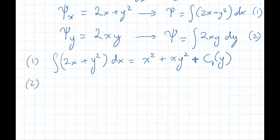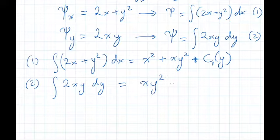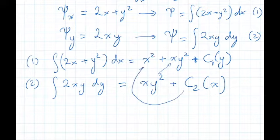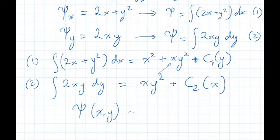The second integral, integral of 2xy dy, y gives us x y squared plus some constant c2 that is constant in y but that means it could be a function in x. In this case we're kind of lucky that certain things match. We can sort of pretty much guess that this is that, and there's no more y to be had so this can go to zero. We finally arrived at psi of xy is x squared plus x y squared.